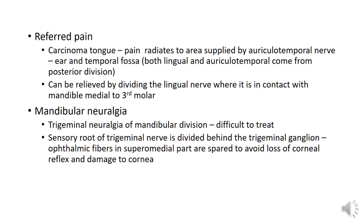The general sensation to the anterior two-thirds of the tongue is provided by the lingual nerve, a branch of the posterior division of the mandibular nerve. In carcinoma of the tongue, pain irradiates to the area supplied by the auriculotemporal nerve — that is, the ear and temporal fossa — because both the lingual nerve and the auriculotemporal nerve come from the same posterior division of the mandibular nerve. This pain can be relieved by dividing the lingual nerve at the point where it is in direct contact with the mandible, medial to the lower third molar teeth.